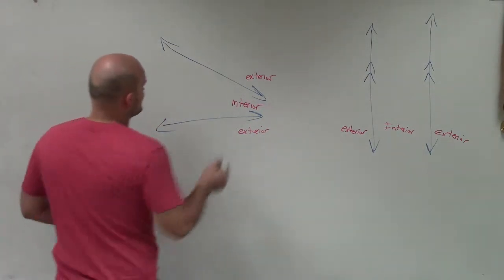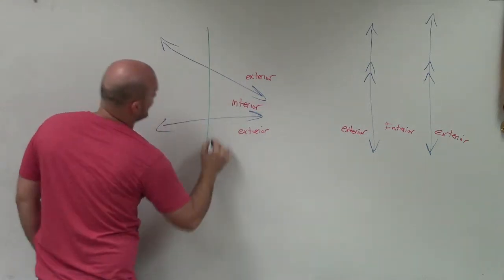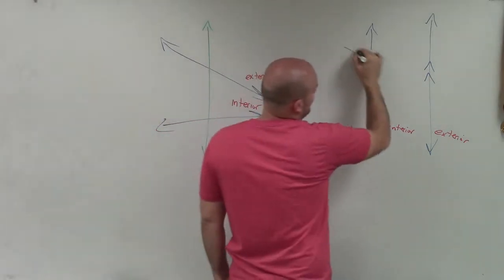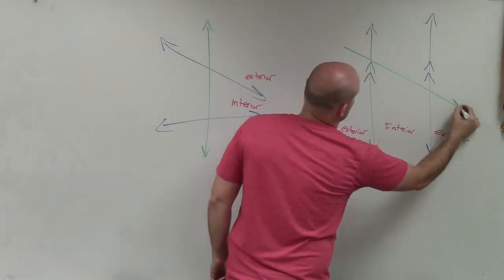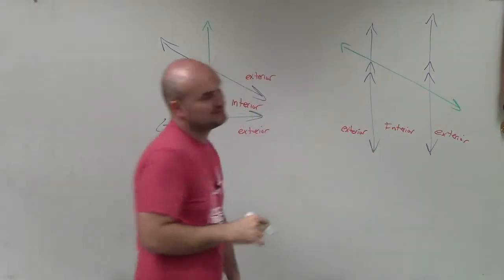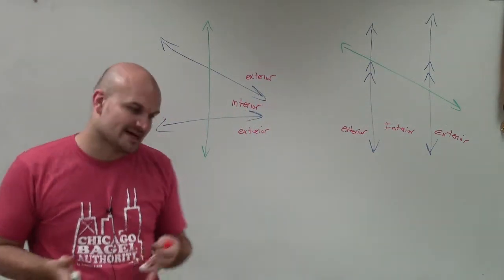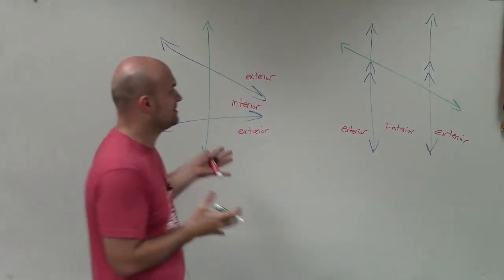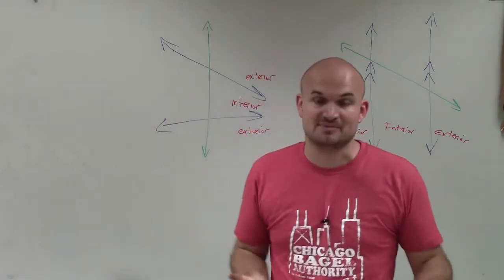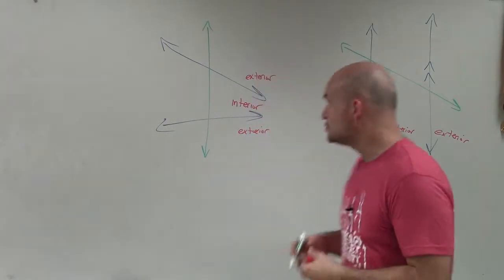That's very important when talking about our angle relationships and how we label them. The next thing is a transversal — a line that is going to intersect two other lines. Anytime we have a line that intersects, we're going to have angle relationships; angles are going to be related in a certain manner.